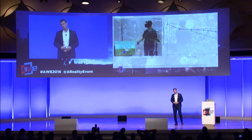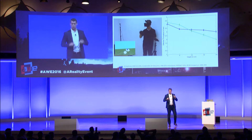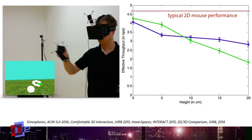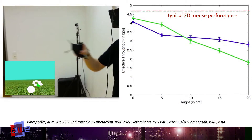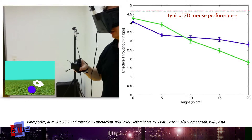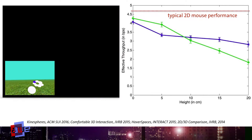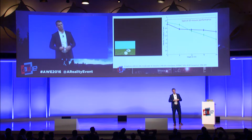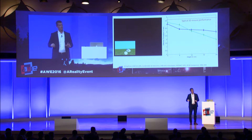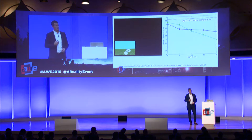However, research has shown that doing interactions in 3D space in mid-air is less performant than using a 2D mouse controller for many selection tasks. One major reason is the missing haptic feedback — without tactile feedback, interactions in space become more inaccurate, with more jitter and more errors compared to haptic devices like a 2D mouse.